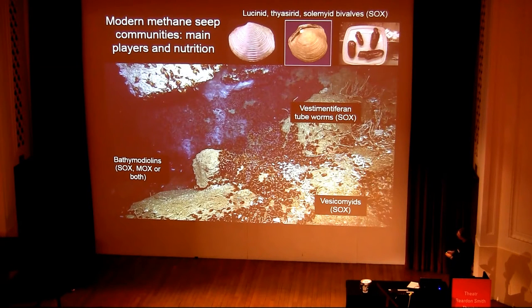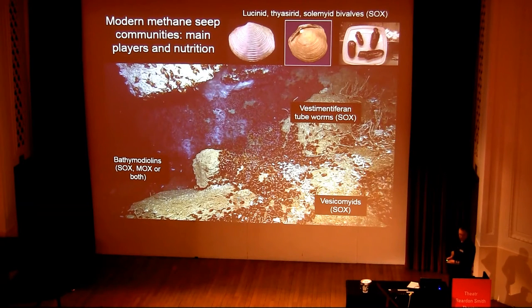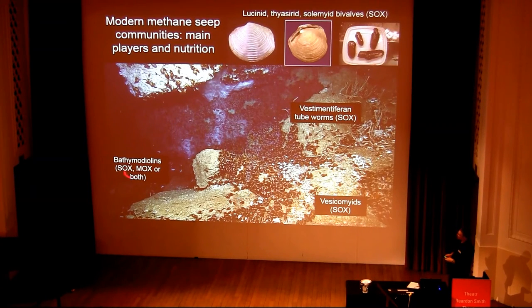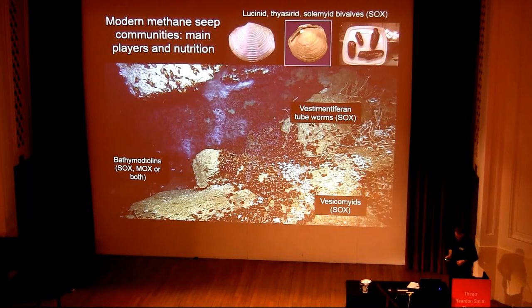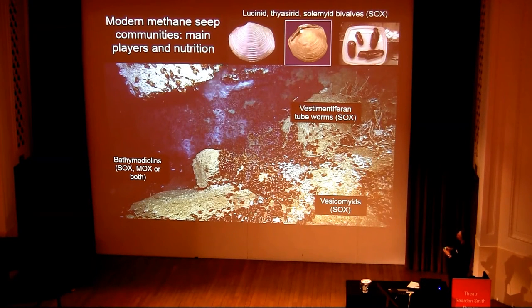It also includes vesicomyid bivalves, all of which have sulphide-oxidising bacteria in their gills, and bathymodiolin mussels, some species of which have sulphide oxidisers, some have methanotrophic symbionts, and some have both — quite clever in utilising a variety of different reduced compounds. And because there's lots of sediment at methane seep sites, there are also infaunal bivalves with symbionts, including lucinids, thyasirids, and solemyid bivalves, all with sulphide-oxidising symbionts.